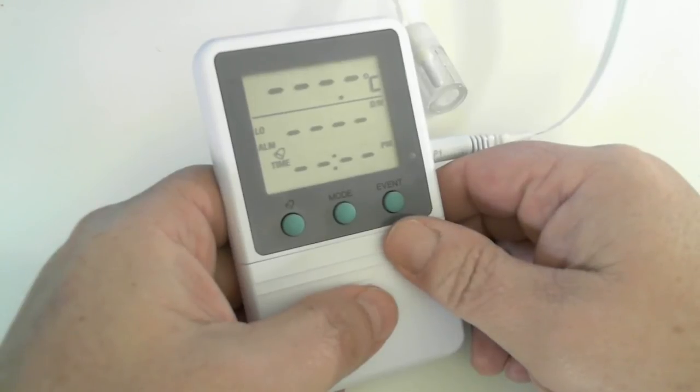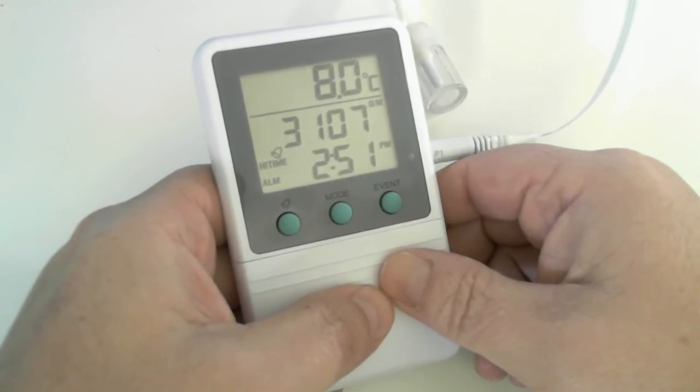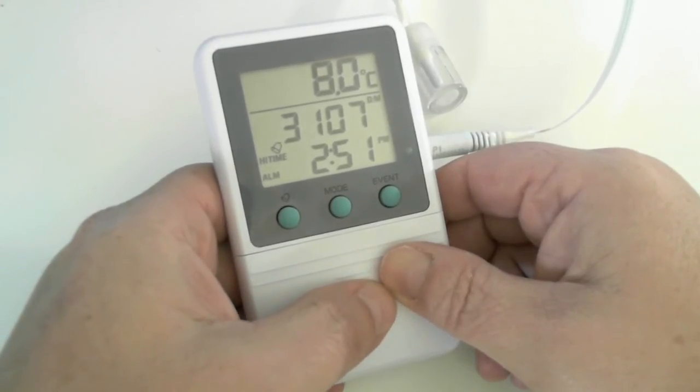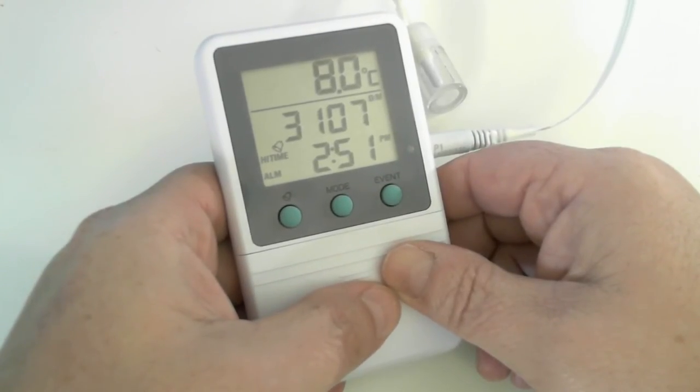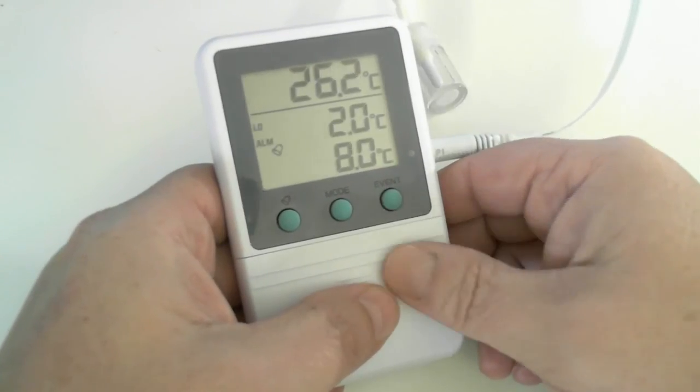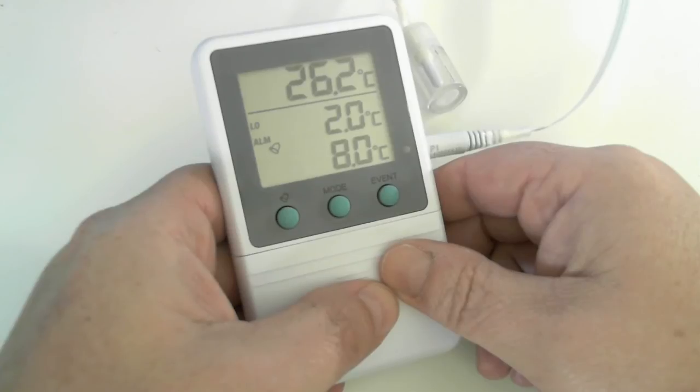If you hit event, our low alarm had no conditions, so nothing is recorded. Hit event again. But our high alarm that is set at 8 degrees C was passed at the month of June 31st at 2:51 PM. And you hit event again. You come back to the main alarm setting screen.